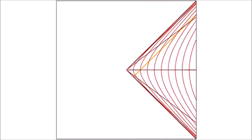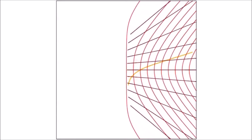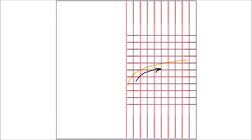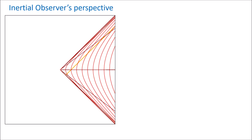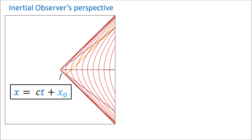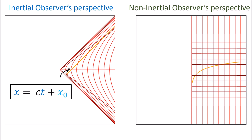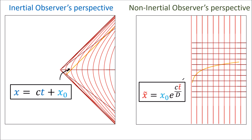Let's do the same thing for a beam of light, which has a straight diagonal world line in an inertial frame. From Rindler's point of view, this beam of light does not have a straight world line either. An inertial observer sees a light beam as having a straight diagonal world line with a slope of 1, but Rindler sees this beam of light as traveling along an exponential world line.